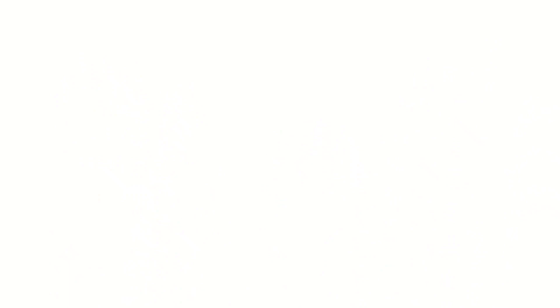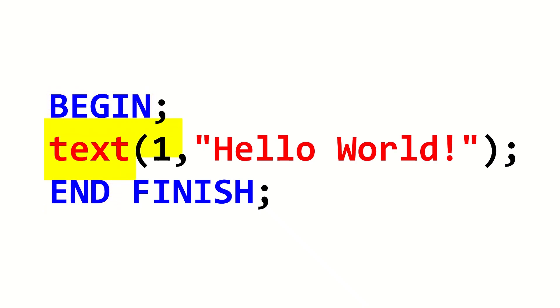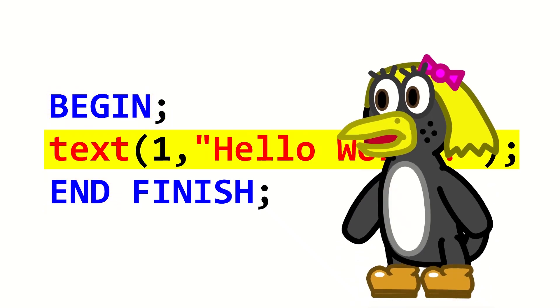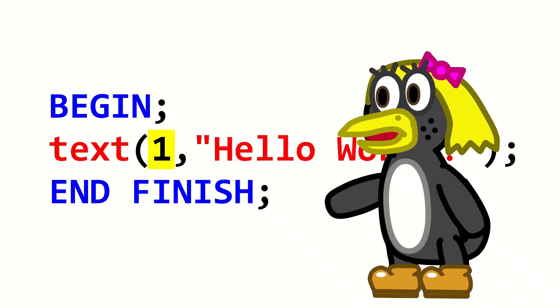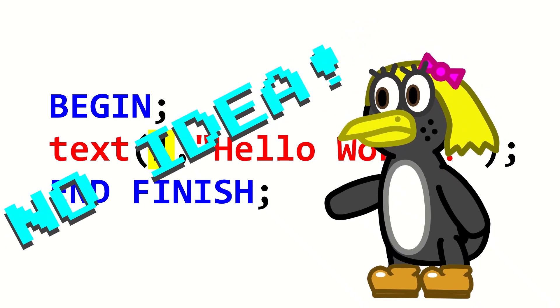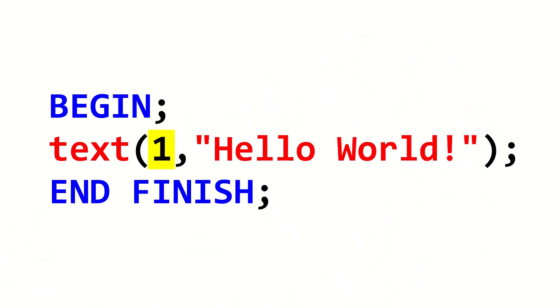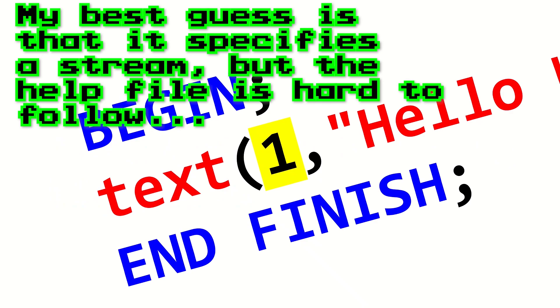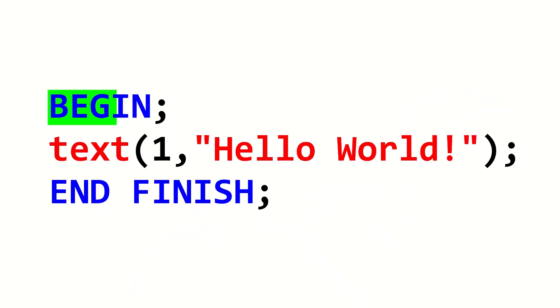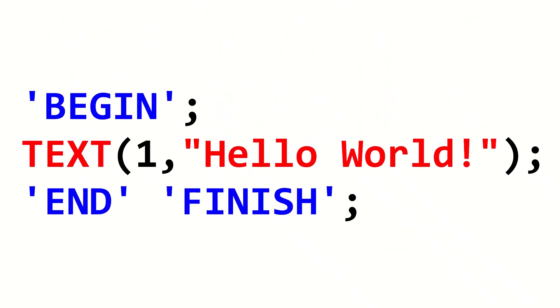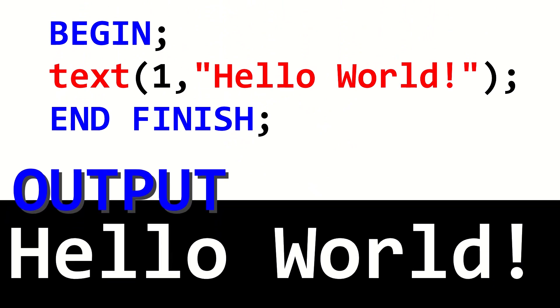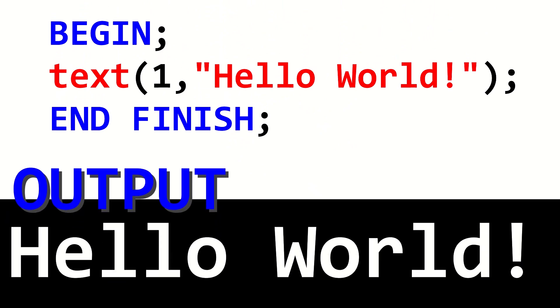Nevertheless, here's the Hello World program in this version of ALGOL. It has a single block containing the whole program, which is just the function called that prints out Hello World. What does that one argument mean? No idea! But if it's anything other than one, it doesn't work. Also, standard ALGOL keywords like begin and end must be capitalized, while everything else must be lowercase. And if you don't like that, you can put everything in uppercase, but the keywords need to be in single quotes! That hurts my eyes, so I won't be doing it.